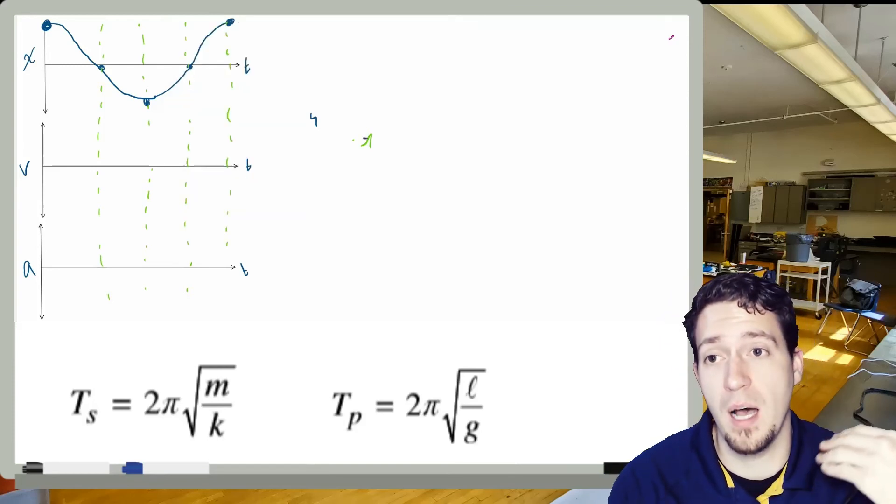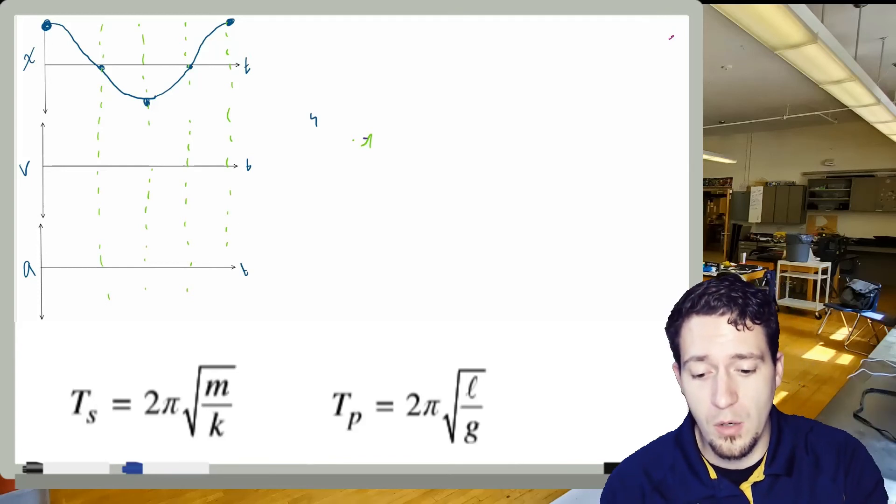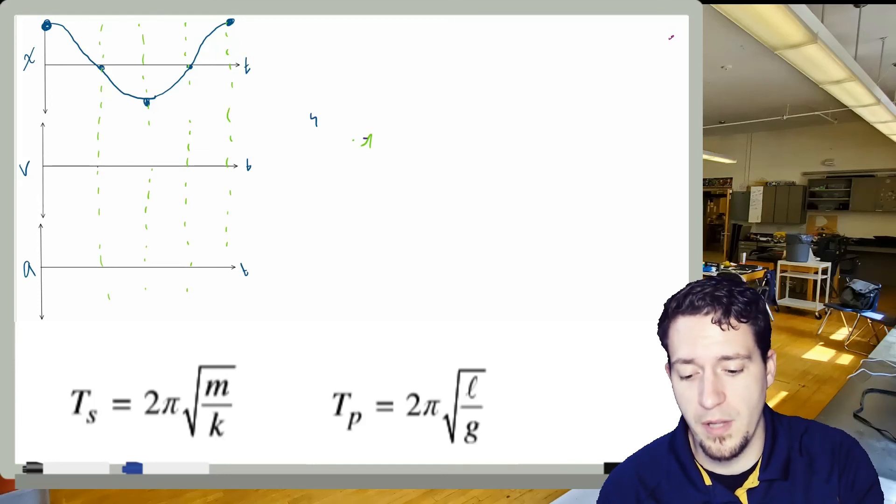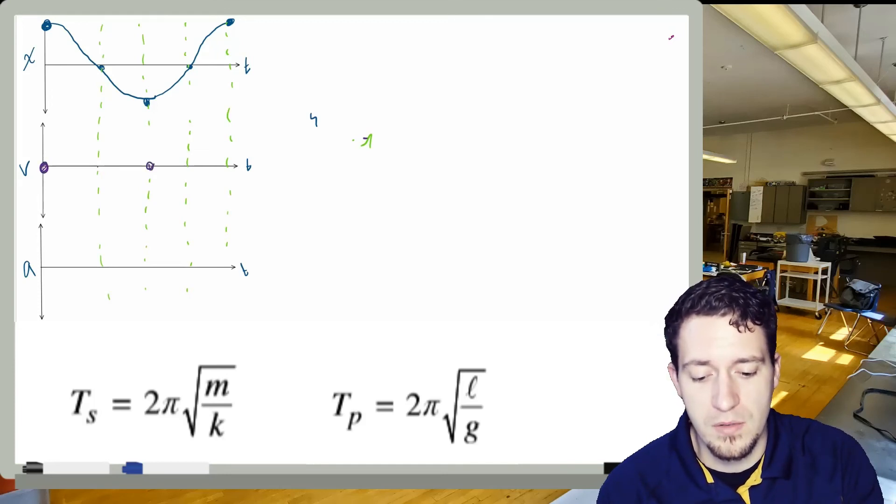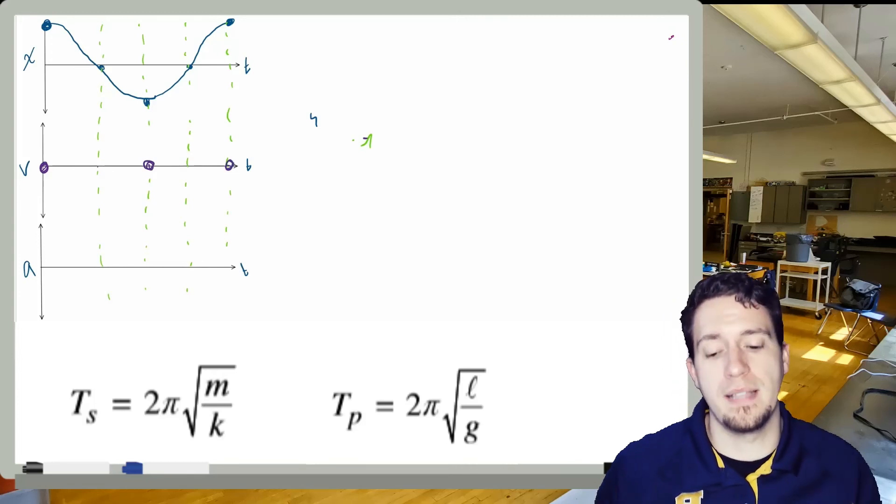Now, whenever we said at equilibrium position, that's where velocity was at a maximum. So then I know that here at those two spots, velocity actually has to be a maximum. So velocity then should be zero here, zero here, and zero there because we said velocity was a maximum when it's at the full stretch.